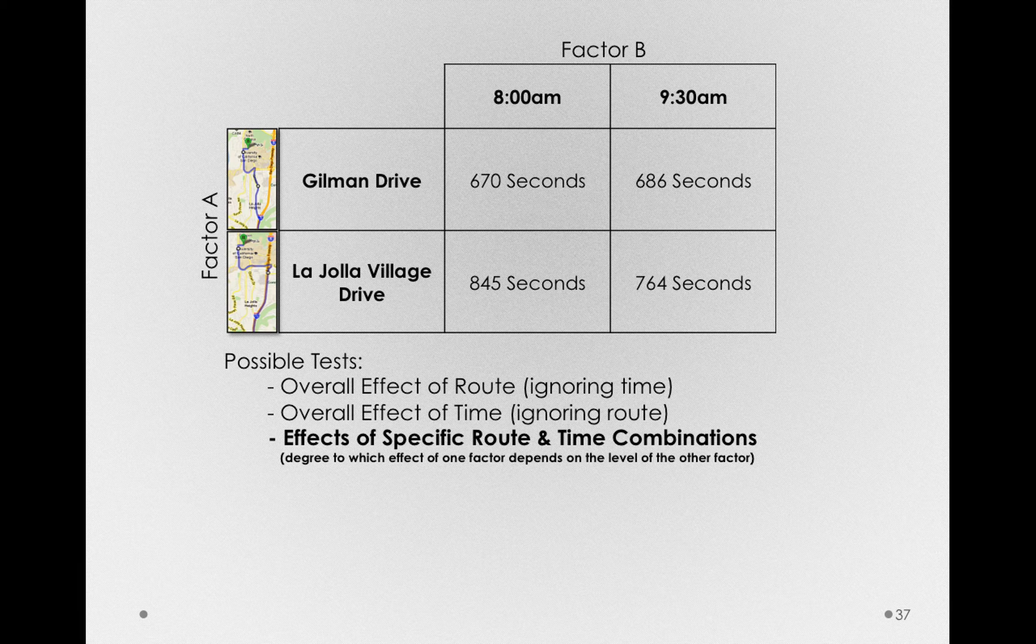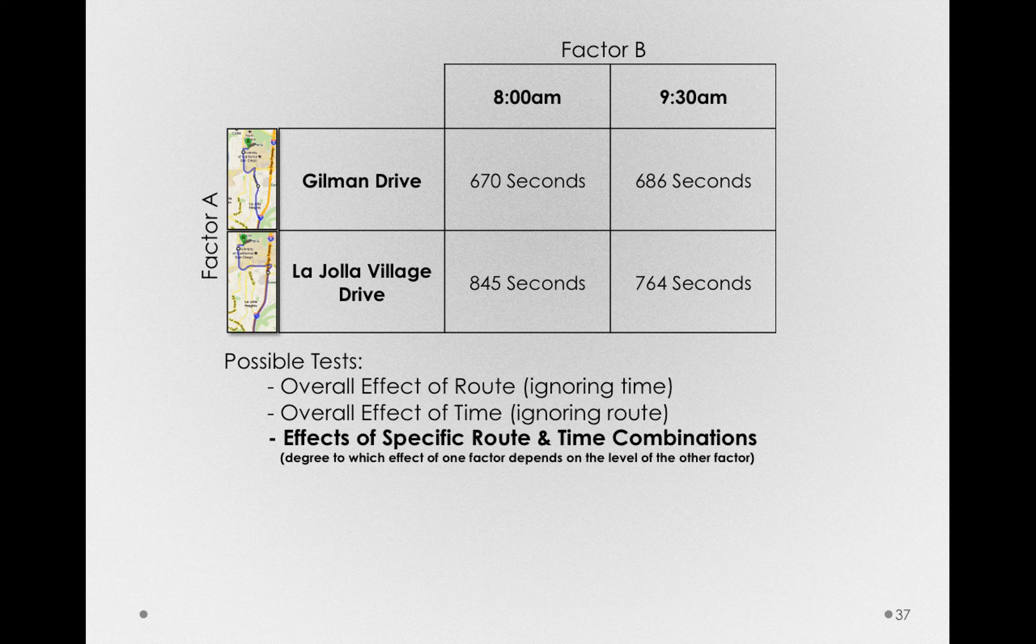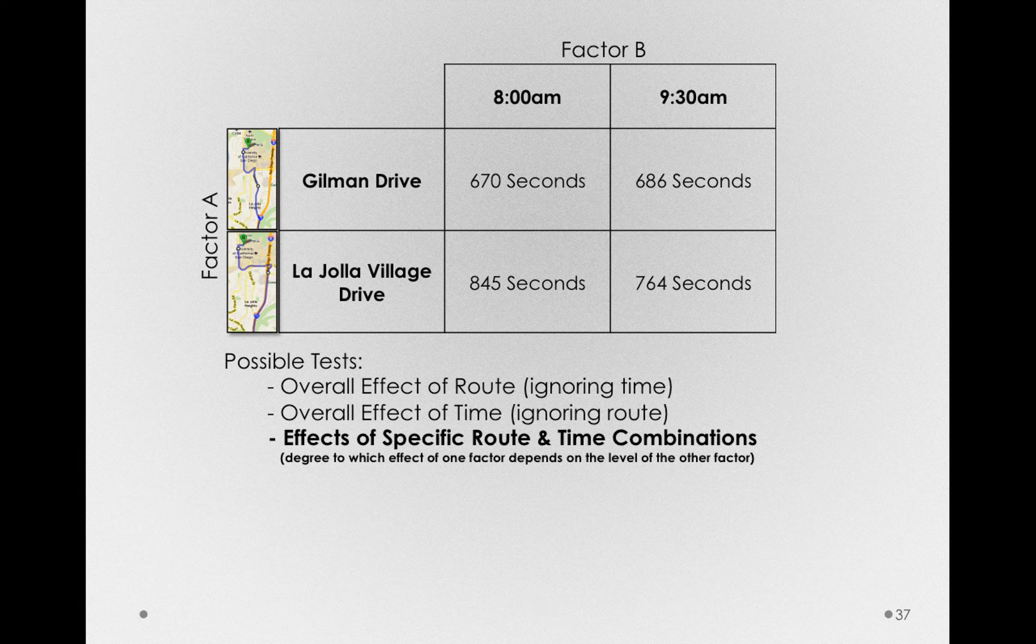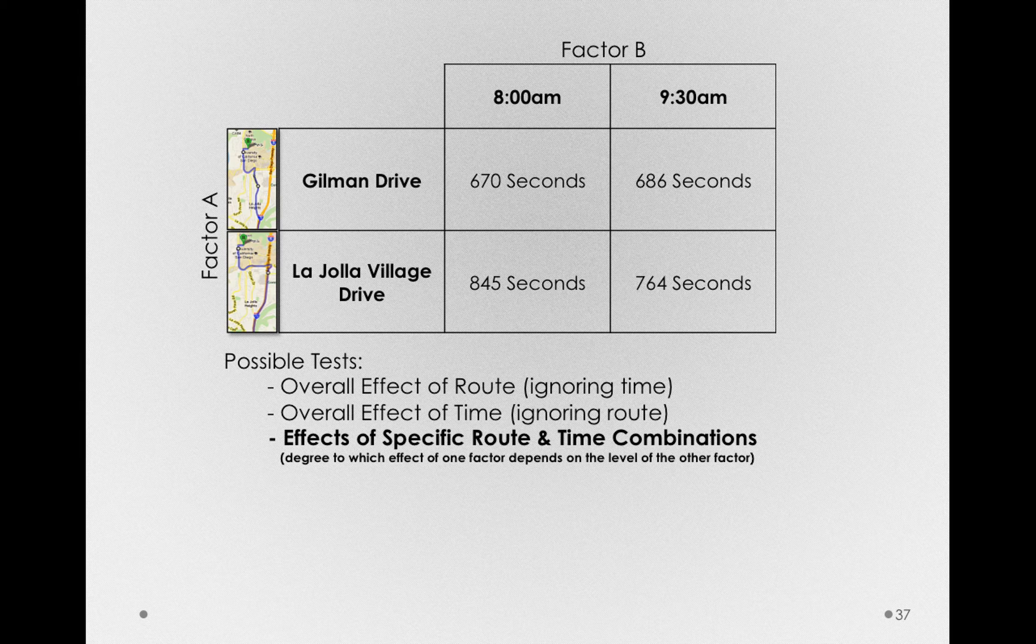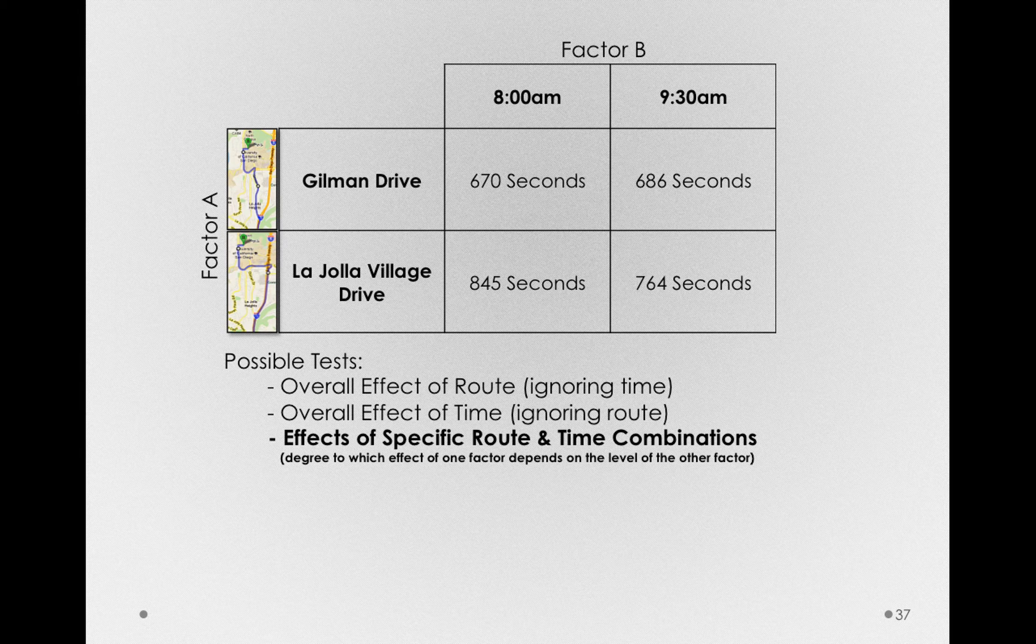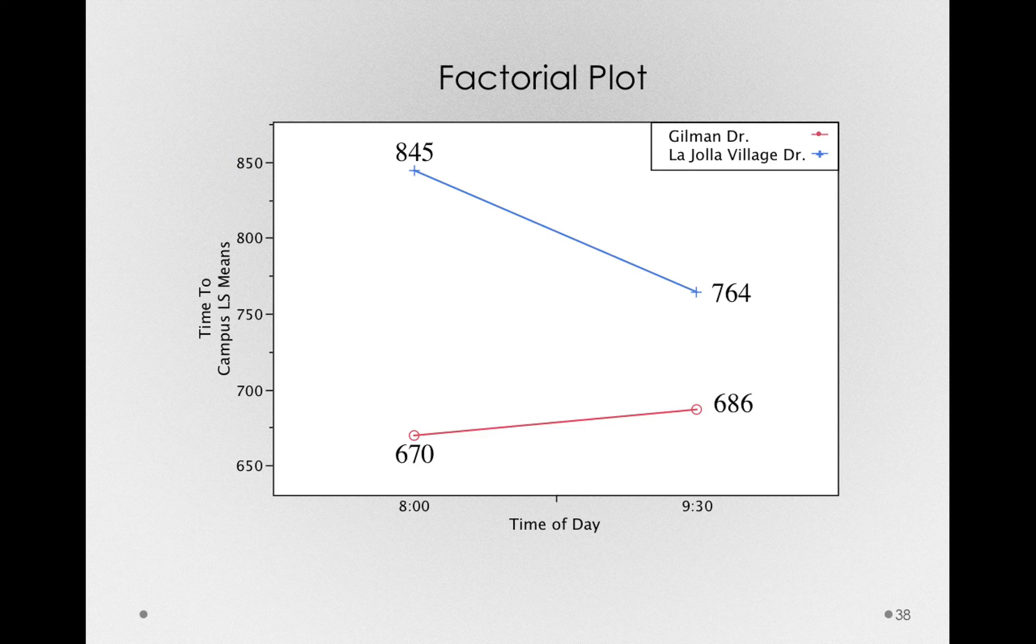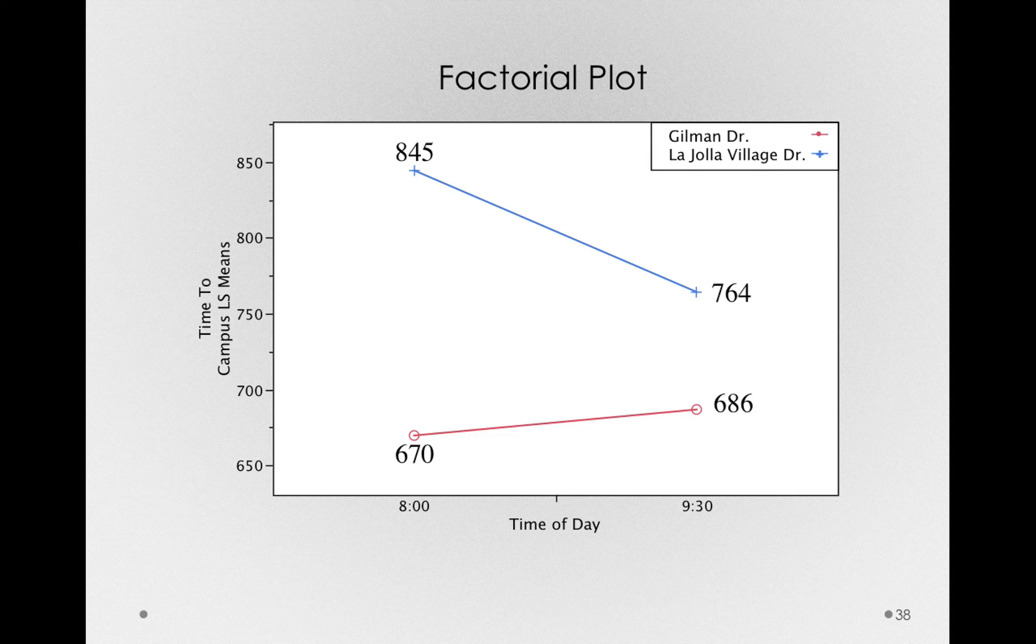And I'll say this differently below. The degree to which the effect of one factor depends on the level of the other factor. Specifically, can we describe the effect of one factor independent of the other factor? Now, this is most easily seen by looking at the factorial plot. And let's start by ignoring La Jolla Village Drive altogether. Let's simply look at Gilman Drive.